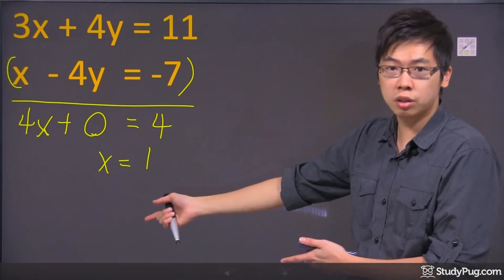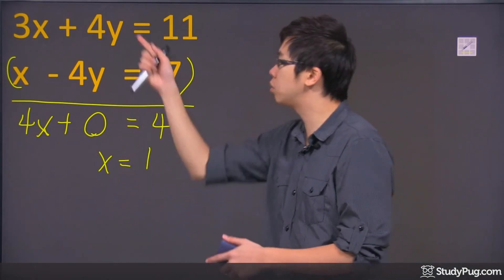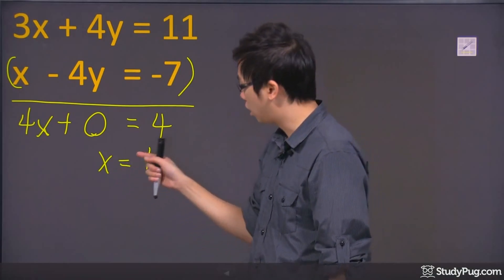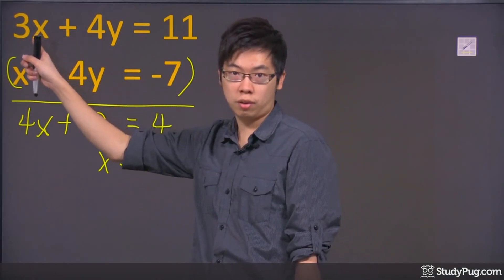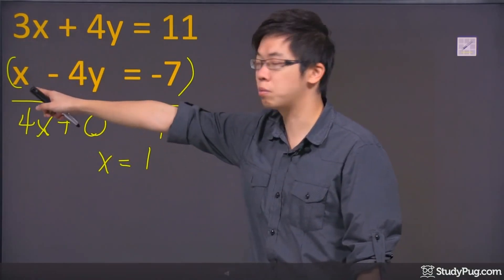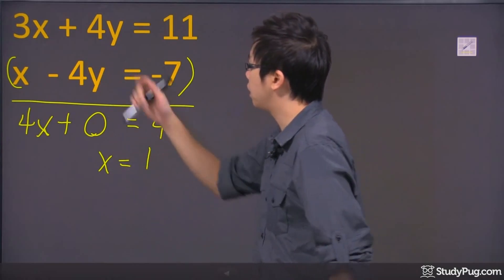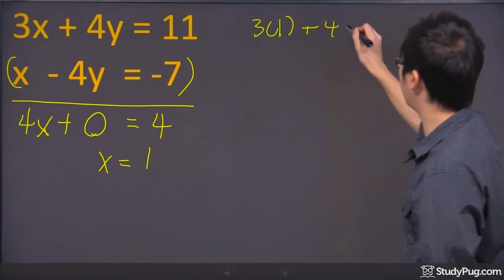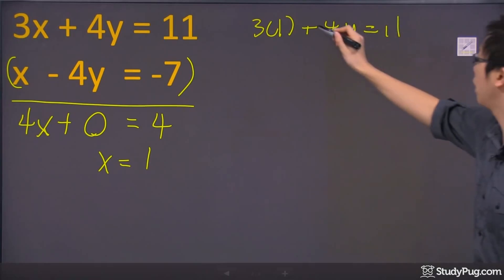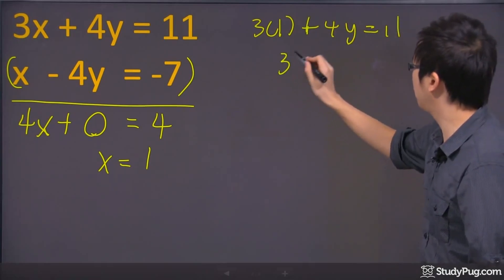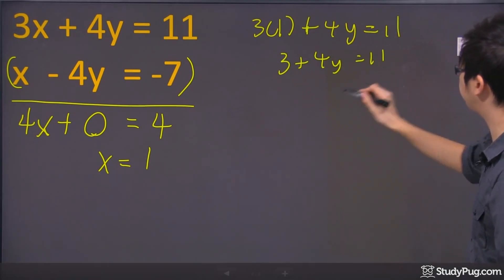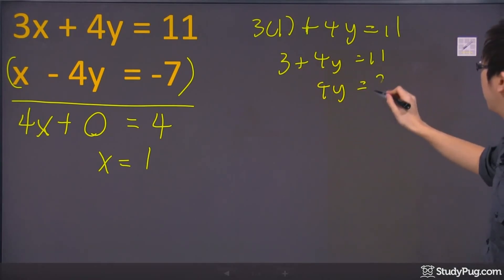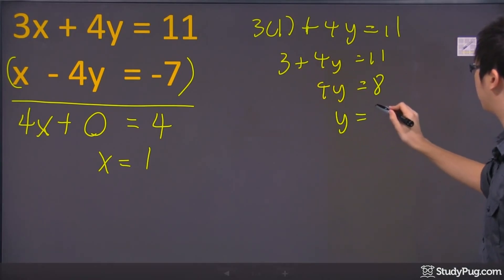If x equals one, what will y be? You have two choices — you just put x equals one in place of x in either equation. Let's use the first one: three times one plus four y equals eleven. So three plus four y equals eleven. Then four y equals eight, and y equals two.